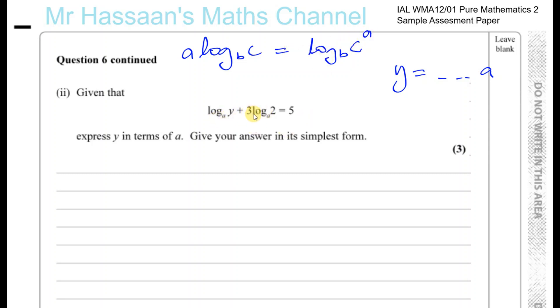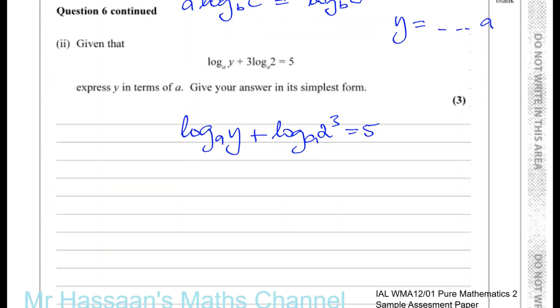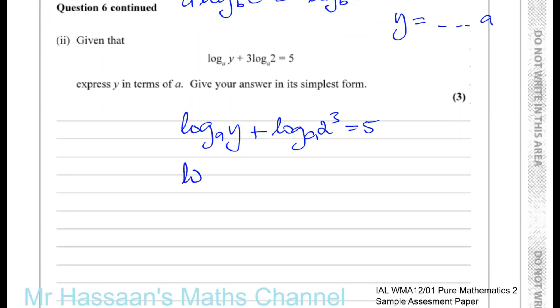So what I'm going to do to this is I'm going to write this as log to the base A of 2 cubed. So I have log to the base A of y plus log to the base A of 2 cubed equals 5. And we know that 2 cubed is 8. So I can write this as log to the base A of y plus log to the base A of 8 equals 5.